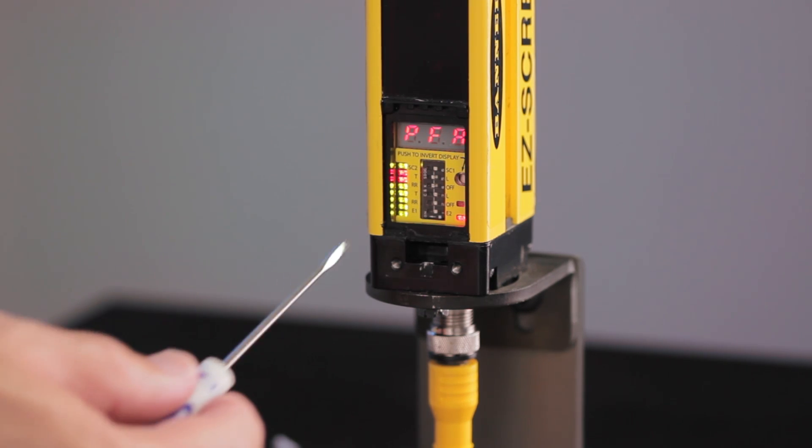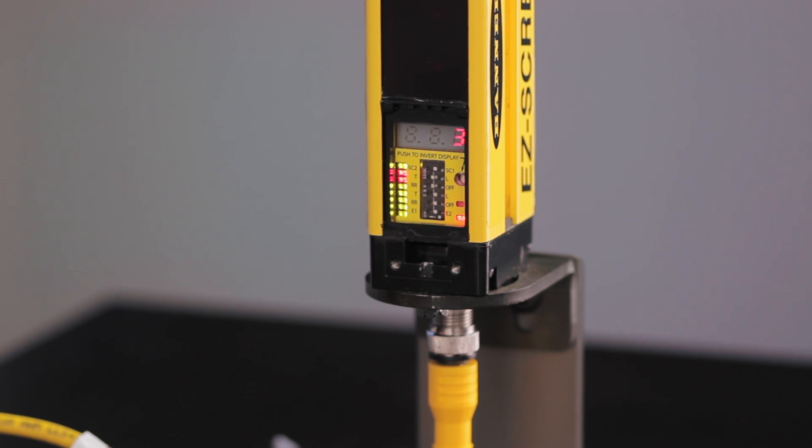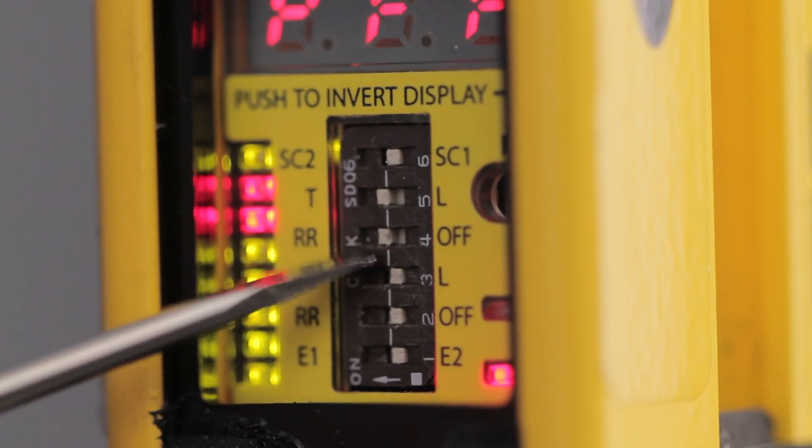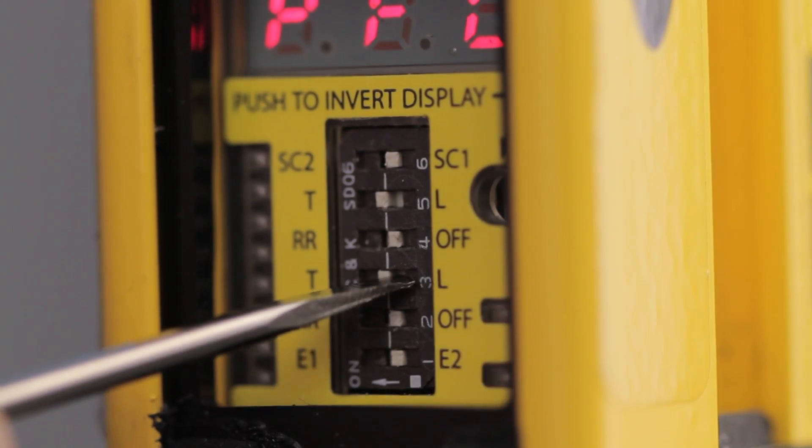You'll also notice on the bar graph that it shows where the obstruction is. Now move the dip switches back to a normal run condition of trip, off, trip, off.